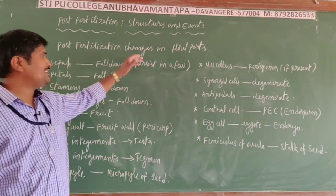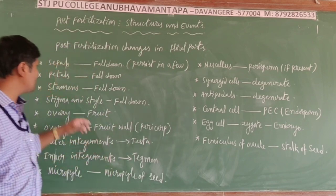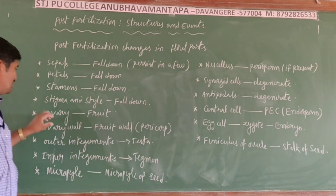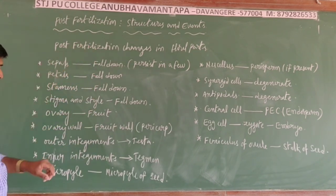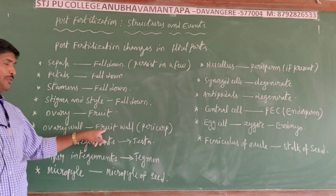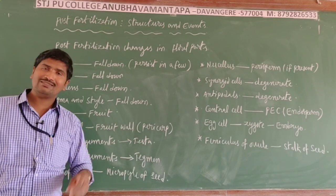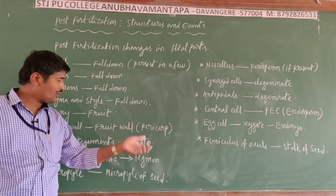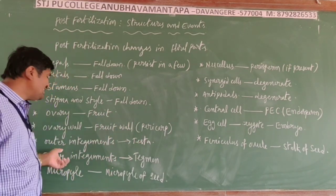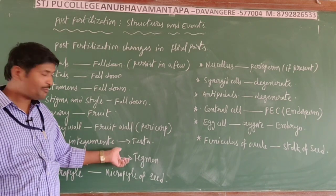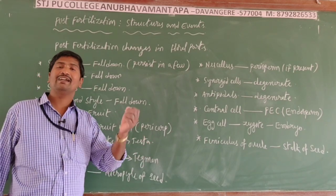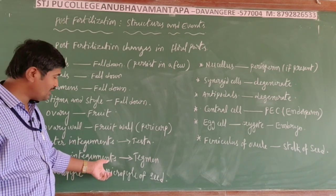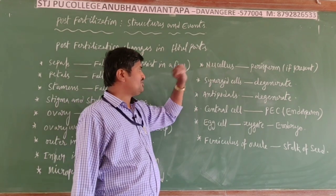To summarize the post-fertilization changes: sepals, petals, stamens, stigma and style all fall down. The ovary is developed into the fruit, and the ovary wall into the fruit wall (pericarp). The outer integument becomes the testa (outer seed coat), the inner integument becomes the tegmen (inner seed coat), and the micropyle of the ovule becomes the micropyle of the seed.